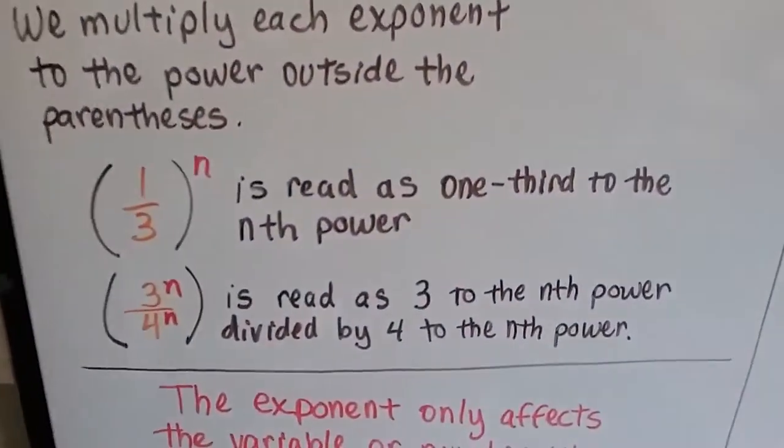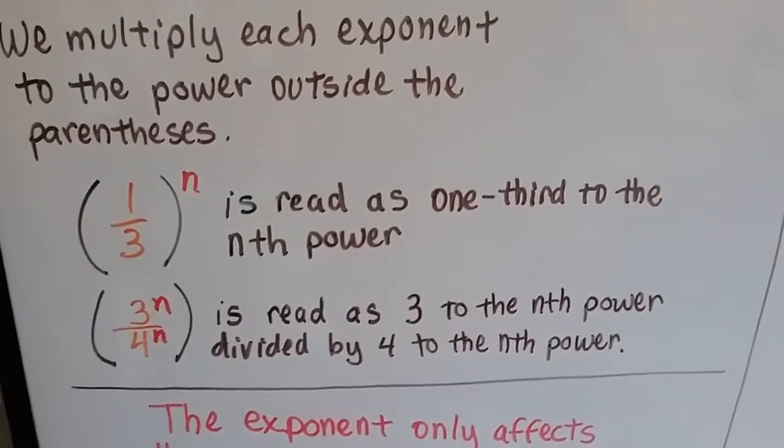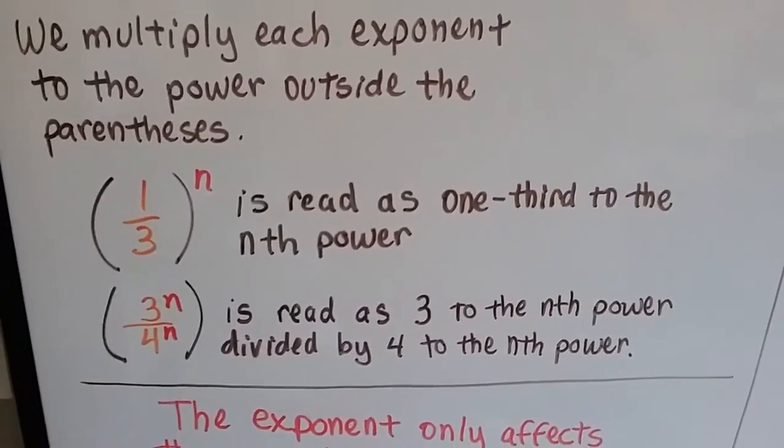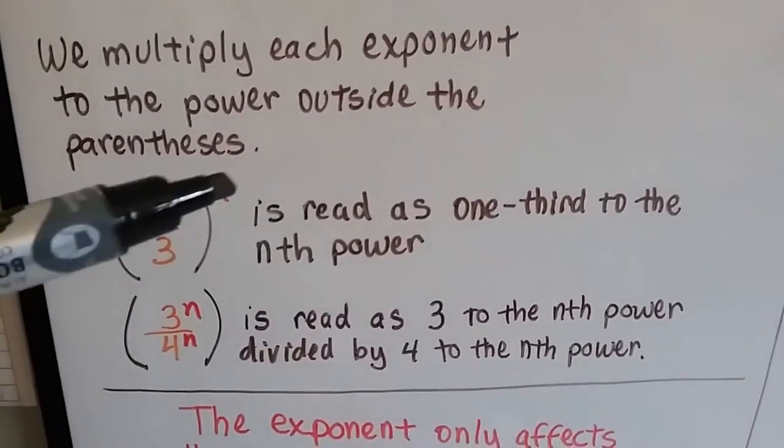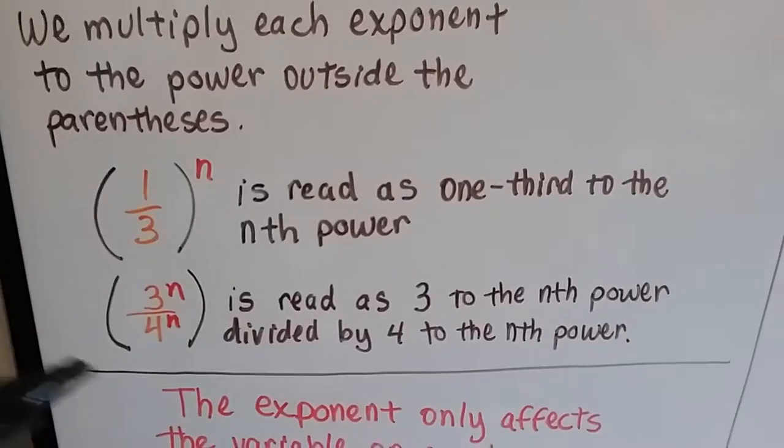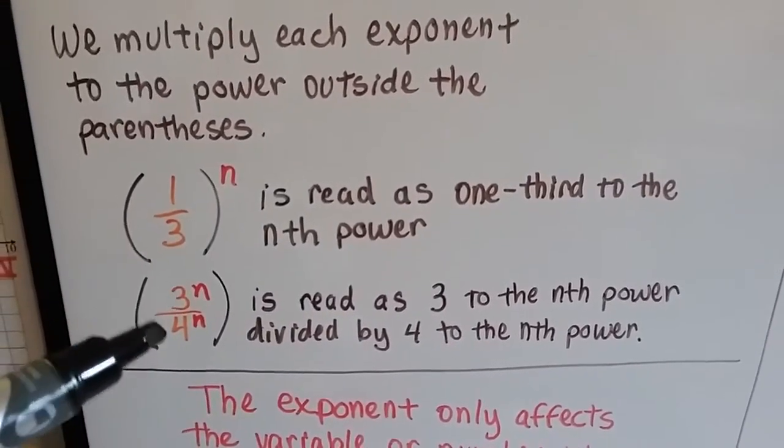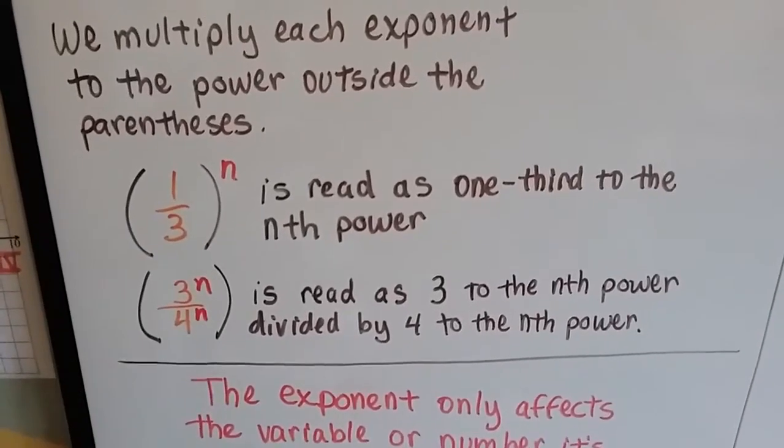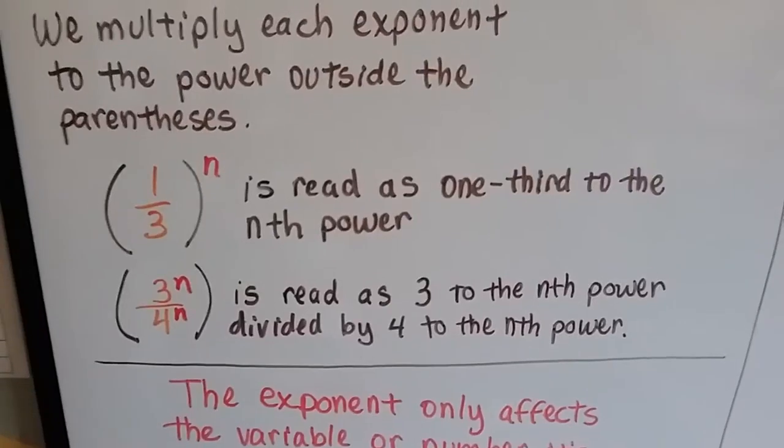And if we have 1/3 to the nth power, it's read as one-third to the nth power. If it was a little 3 outside, it would be 1/3 to the third power. And if we see 3 to the nth over 4 with an n, it's read as 3 to the nth power divided by 4 to the nth power.